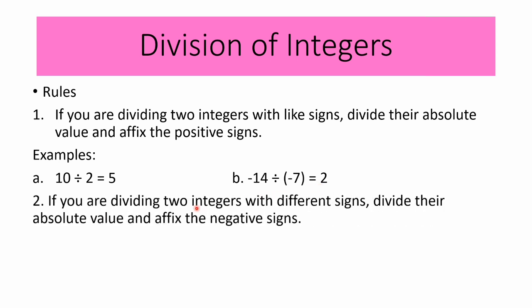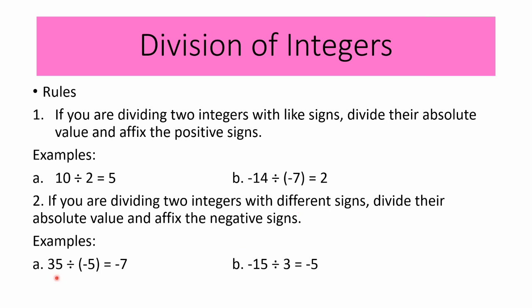For the second rule: if you are dividing two integers with different signs, divide their absolute values and affix the negative sign. When dividing two integers with different signs, the quotient is always negative. For example letter A: 35 divided by negative 5 equals negative 7. For letter B: negative 15 divided by 3 equals negative 5.